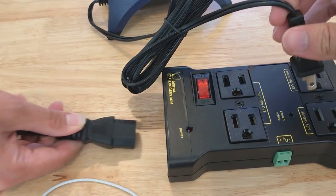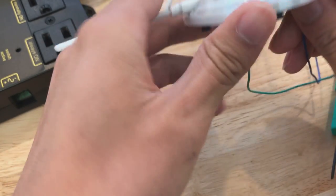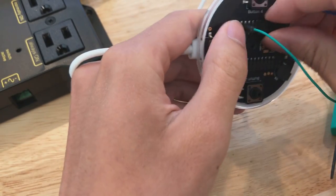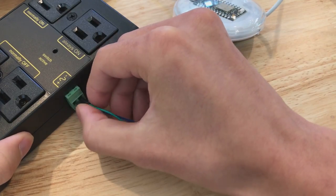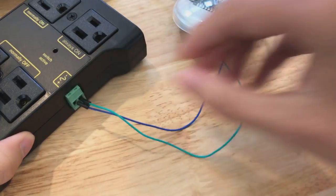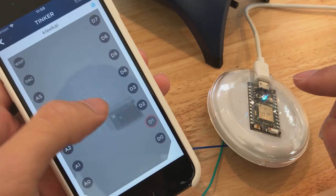We have a relay made by Digital Loggers, and this thing is a great piece of gear for any maker to have. If you want to control anything that plugs into a regular wall outlet, obviously you can't be running 120 volts through your little microcontroller. Instead, you get a relay like this and connect your microcontroller to this green connector on the side.